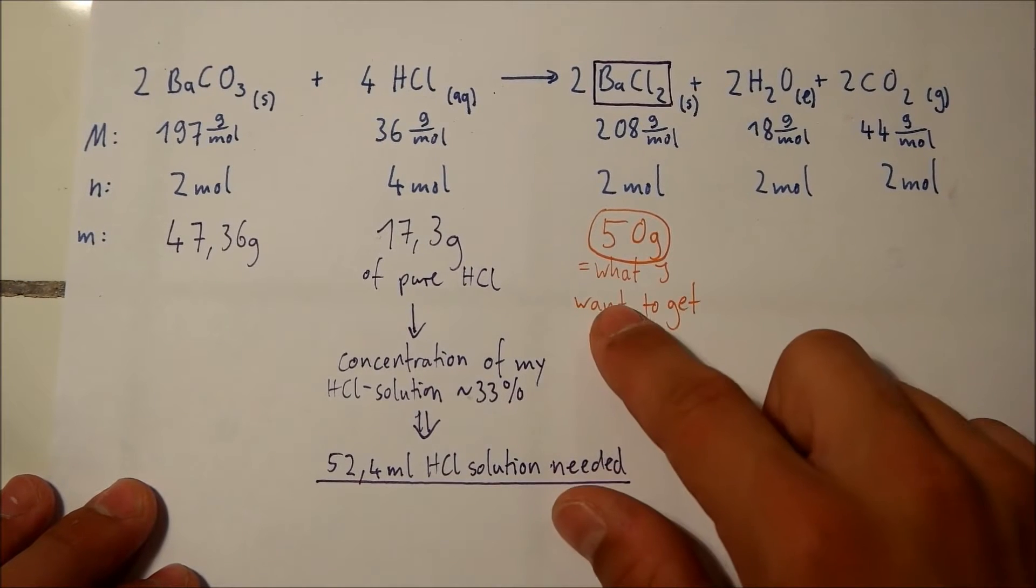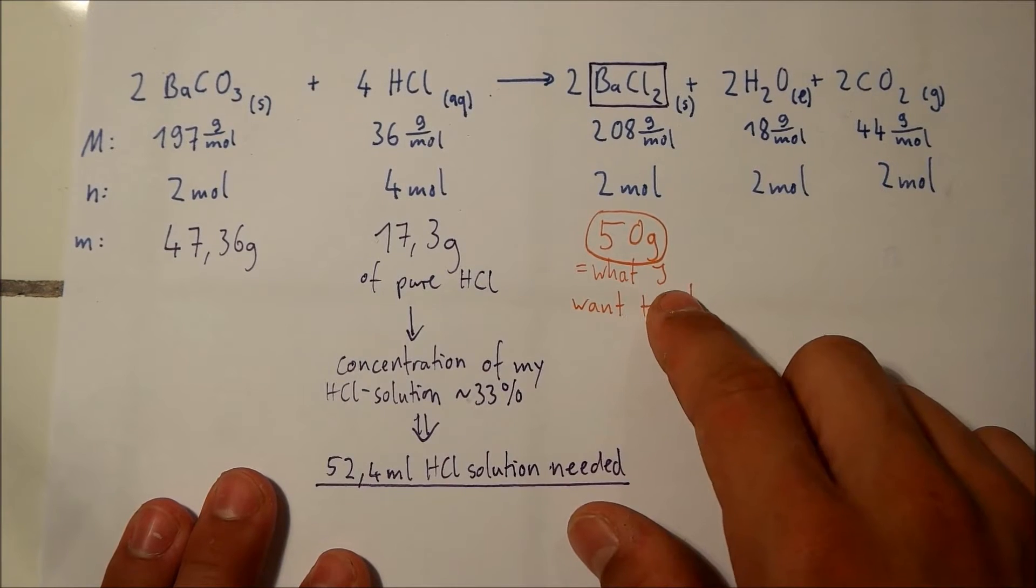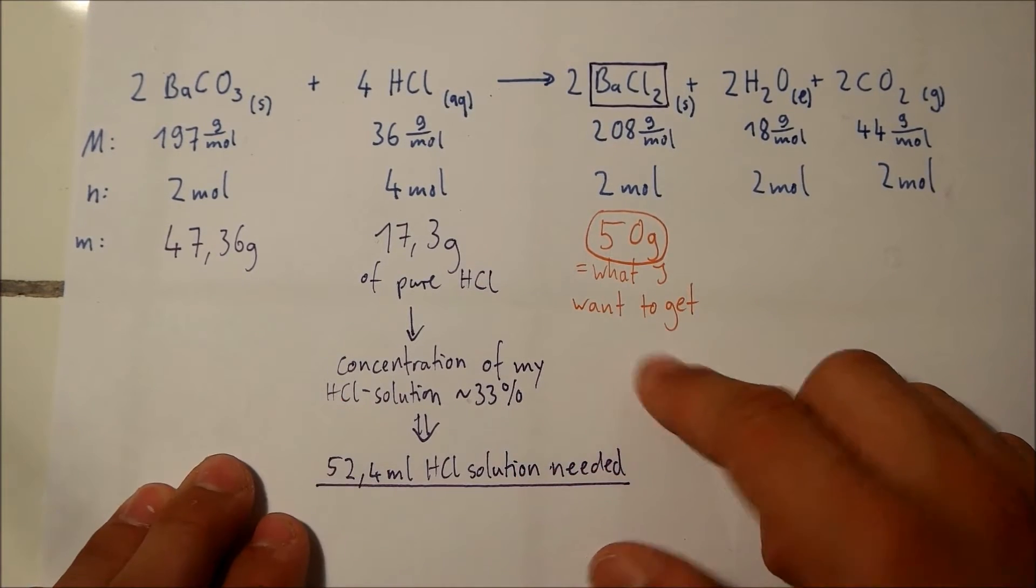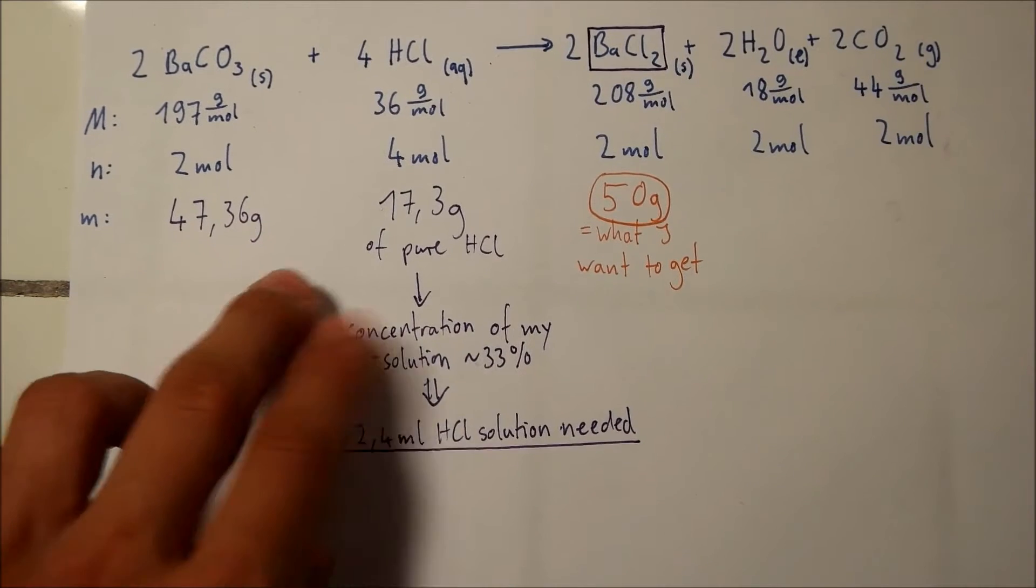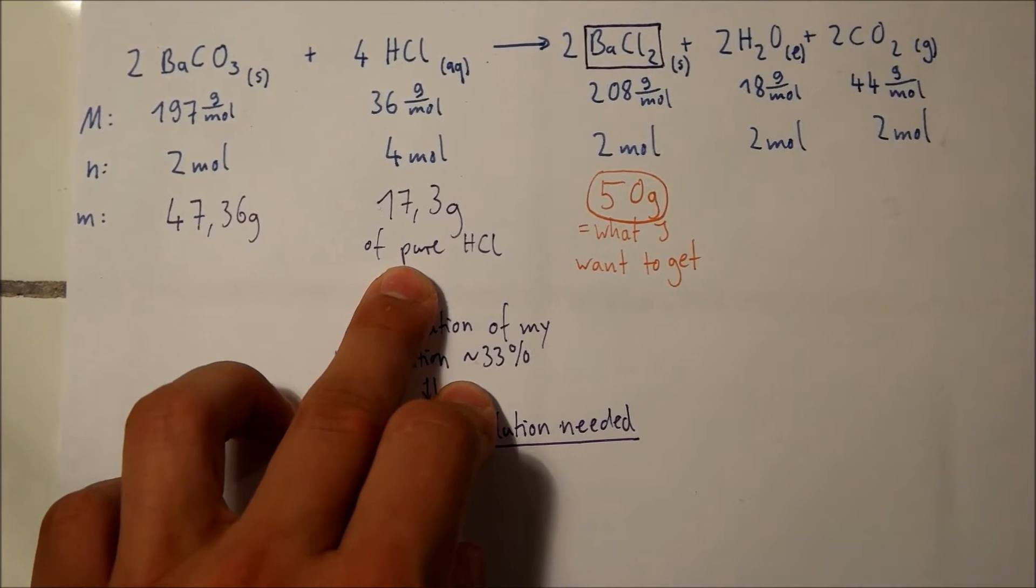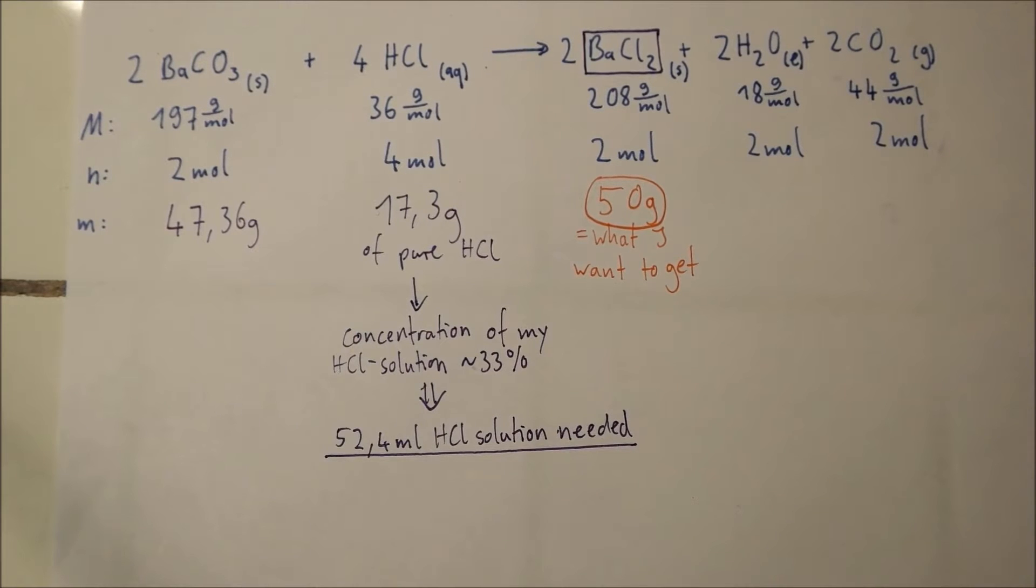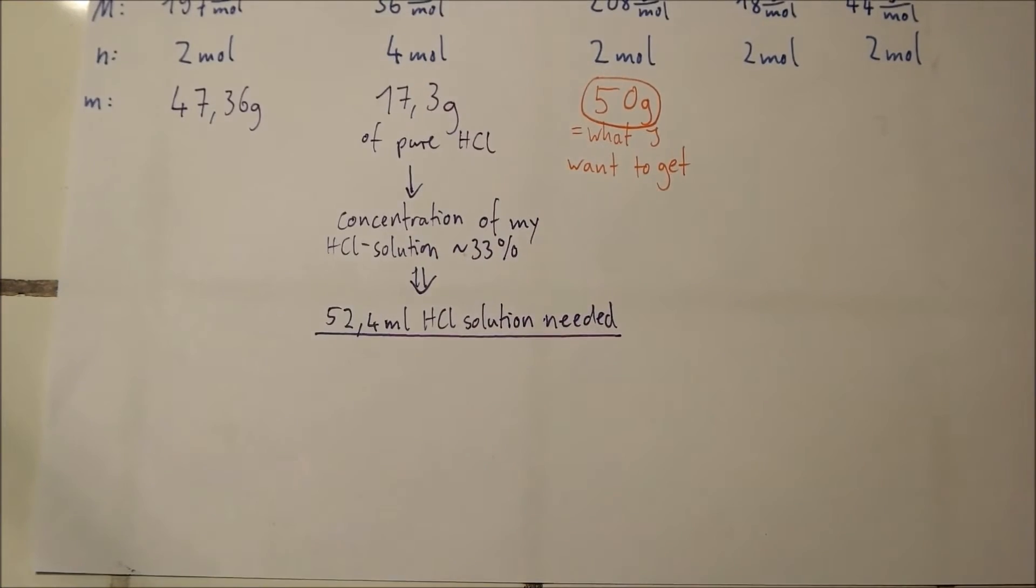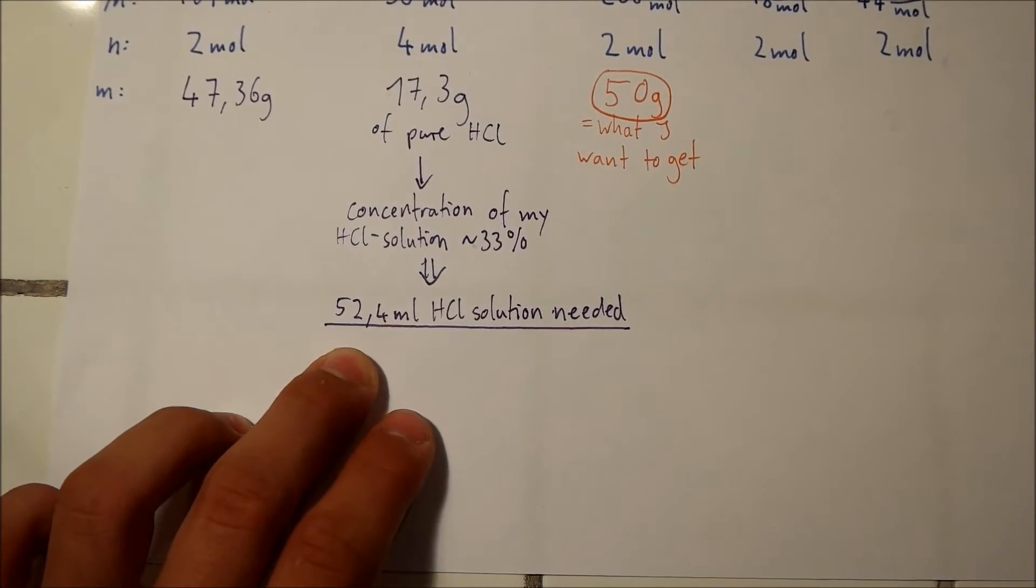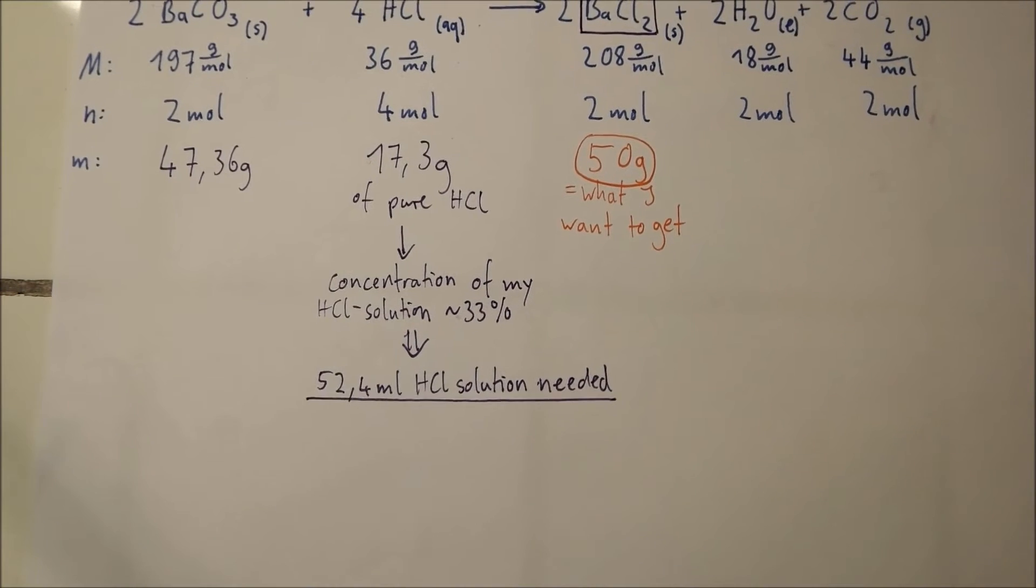To find out how much of those chemicals I need to get 50 grams of barium chloride, I did a few calculations. I found out that I need 47 grams of barium carbonate and 17.3 grams of pure HCl. That's a problem because I've got no pure HCl gas. I don't want to make it. My HCl solution has only 33%, so I had to calculate. Now I know that I need 52 milliliters of my HCl solution.